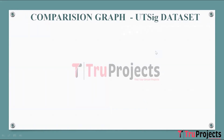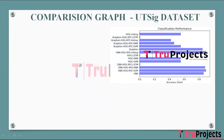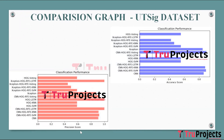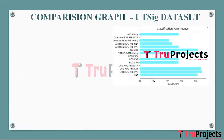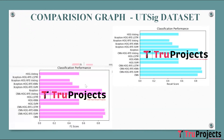The UT Signature Dataset is utilized to enhance the variety of signatures considered in the project, allowing for a more comprehensive evaluation of the proposed hybrid feature extraction approach. Accuracy, precision, recall, and F1 comparison graphs for the UT Signature Dataset are also presented, where the x-axis represents the respective score and the y-axis represents the algorithm name.